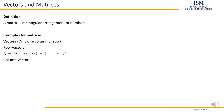In opposition, we have column vectors. Here we only have one column and many entries — one column, many rows.